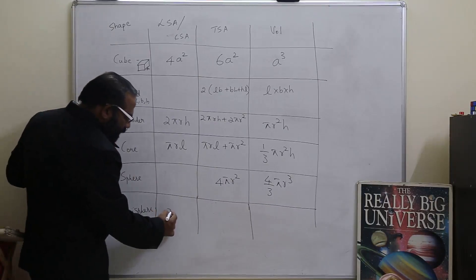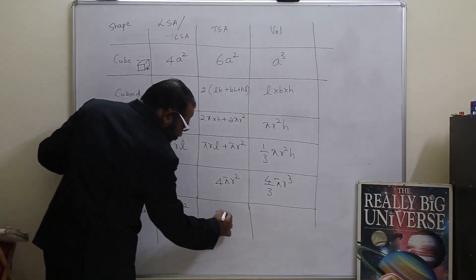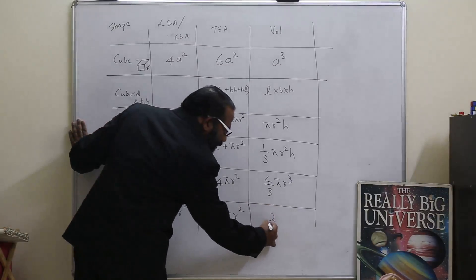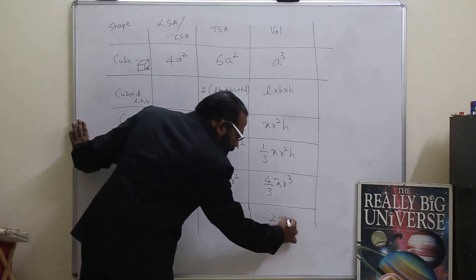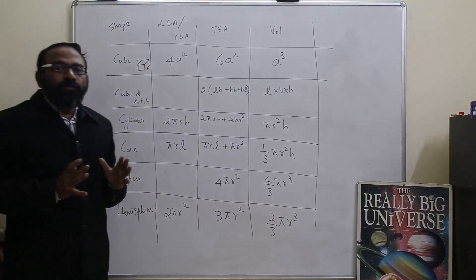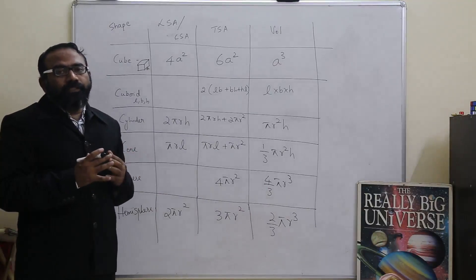Hemisphere: the curved surface area is 2πr squared, the total surface area is 3πr squared, and the volume is 2 by 3 πr cubed. So I hope you have understood the different formulas and you need to remember this because this will come in very handy in solving all the problems.